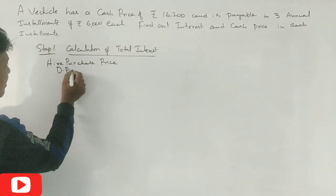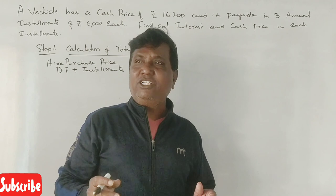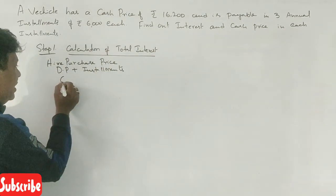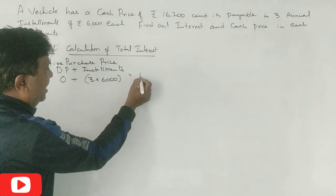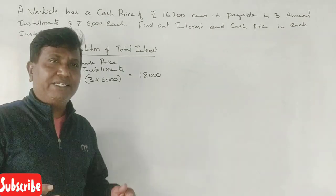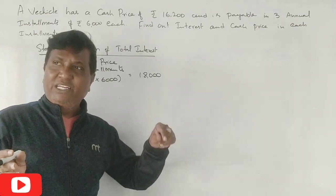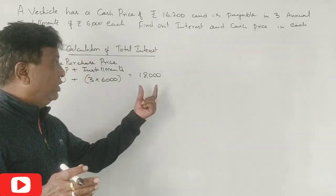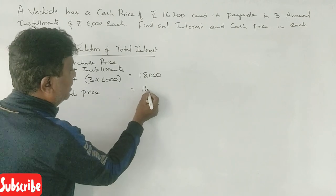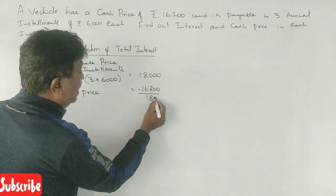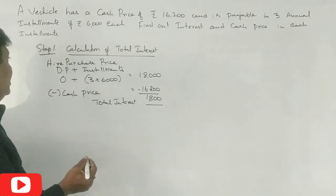Higher purchase price equals down payment plus installments. There is no down payment here. In three installments, we have payment of Rs. 6,000 each, so 3 × 6,000 = 18,000. That means the higher purchase price is Rs. 18,000. The cash price is Rs. 16,200. So the total interest is Rs. 18,000 minus Rs. 16,200 = Rs. 1,800. This is step number one.